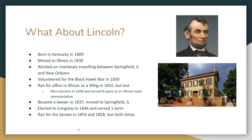In 1830, the Lincoln family moved to Illinois because of some sickness going on in Kentucky. When Lincoln got a little older, he worked on riverboats traveling between Springfield, Illinois and New Orleans along the Mississippi. In 1832, he volunteered to serve in the Black Hawk War — you may remember reading the Black Hawk surrender speech. He was elected captain of his company, but never saw active duty; his company was still in training when Black Hawk was captured.